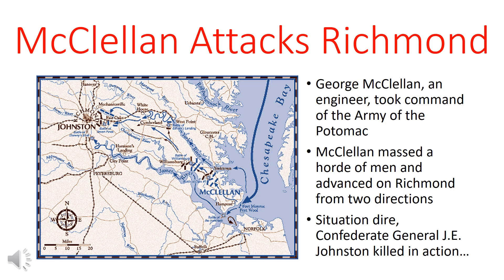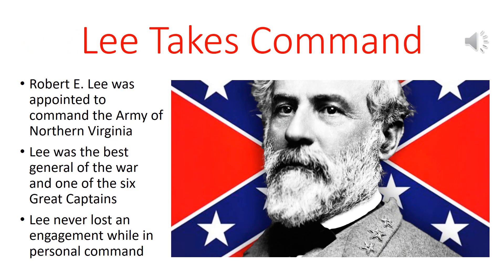Lincoln was displeased with First Manassas, so he gave command of the Army of the Potomac to George McClellan, who was an engineer, not a real soldier. McClellan was good at organizing and massed a horde of men, launching a two-pronged attack on Virginia, mostly up the peninsula. The situation got dire — McClellan got right outside of Richmond — and then Confederate commanding general Joseph E. Johnston was killed in action. Jefferson Davis turned to Robert E. Lee, who took command of the Army of Northern Virginia and saved the South, making sure it put up a good fight.